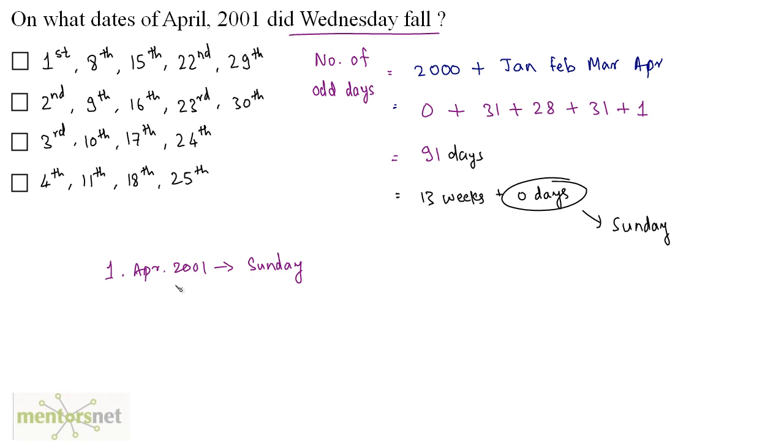And we have been asked on what dates of April 2001 will Wednesday fall. So Sunday, Monday, Tuesday, Wednesday. That means 3 more days, so 2, 3 and 4. So 4th April 2001 will be a Wednesday. The next Wednesday will come after 7 days. So 7 plus 4 is 11. So 11 April will be a Wednesday, then again plus 7, so 18th and again plus 7 which is 25th April. So option D is the correct answer.